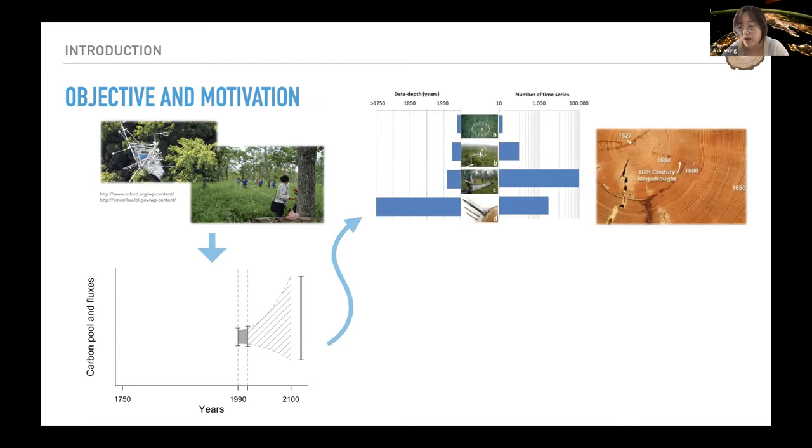Here we came up with the idea of using tree ring width as a benchmark for land surface models. Tree ring records can provide long-term time series that can go back to pre-industrial periods, which are expected to have less impact of anthropogenic disturbances. Also, it can be very important information to assess the effect of climate change on the carbon cycle.